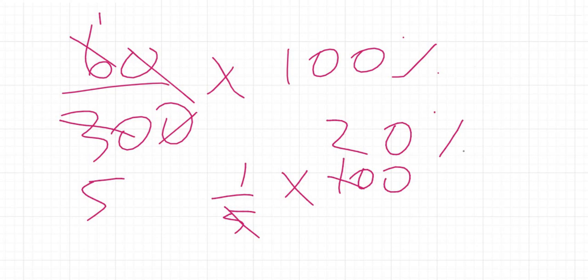To summarize: to find a percent of something — for example, ten percent of fifty — write 10 over 100 times 50 and simplify. To find what percent one amount is of another, write the amount spent as a fraction of the total amount, multiply by a hundred percent, and simplify. That fraction gives you your percentage.